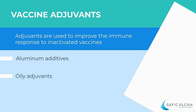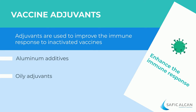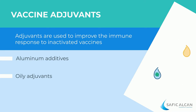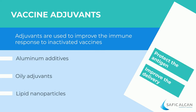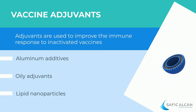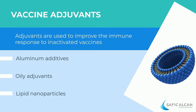Oily adjuvants: oily substances can enhance the immune response. Oily adjuvants allow the formulation of vaccine emulsions in the presence of an aqueous phase containing the antigen. Lipid nanoparticles can be used to protect and improve the delivery of the active substance by encapsulating the antigen — this is the case of the latest mRNA vaccines.